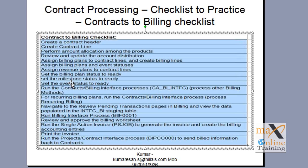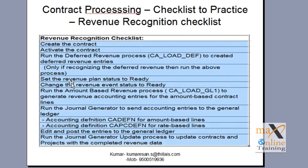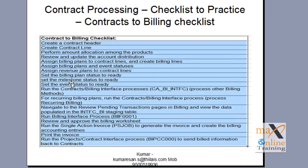So this is the contracts to billing checklist. Next, I'm going to review the revenue recognition process checklist. Before that, do you have any questions on the checklist for creating the bill — contracts to billing?